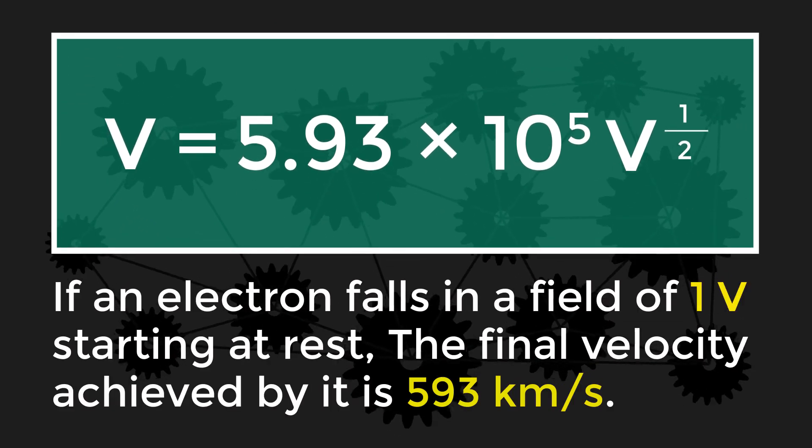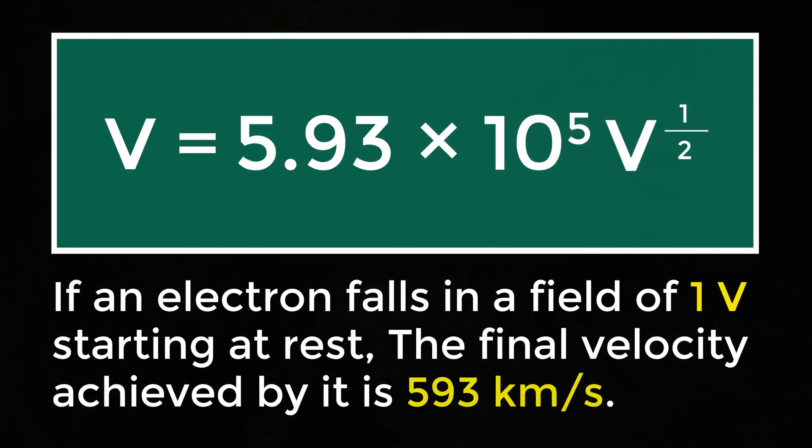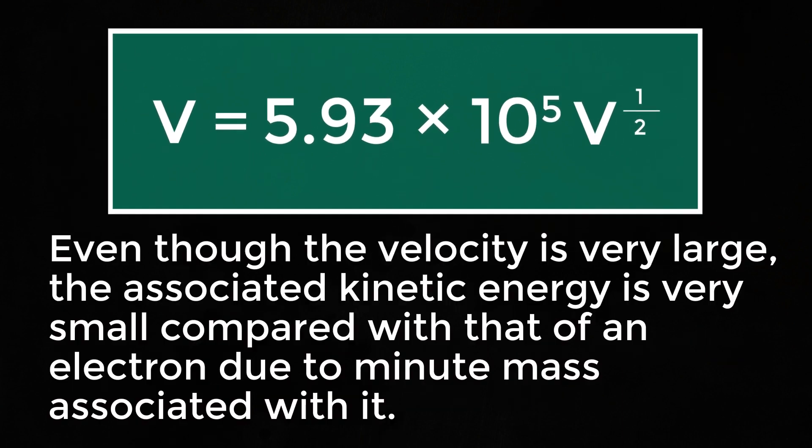So if an electron falls in a field of 1 volt starting at rest, the final velocity achieved by it is 593 kilometers per second. Even though the velocity is very large, the associated kinetic energy is very small compared with that of macroscopic objects due to the very small mass associated with it.